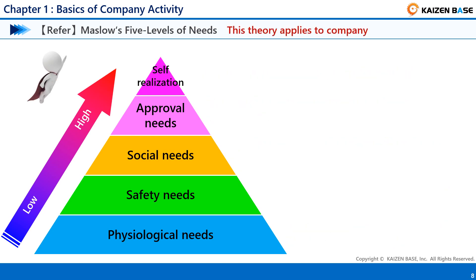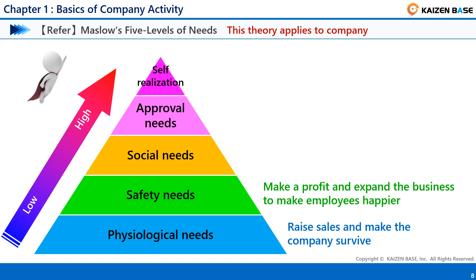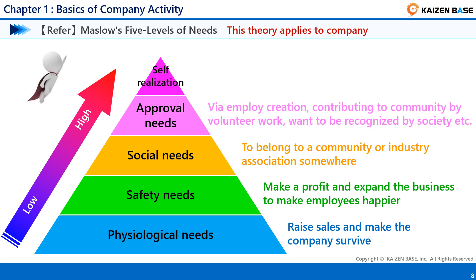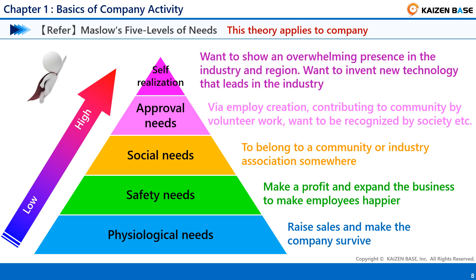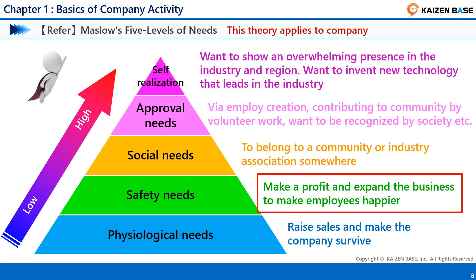These 5 levels of needs also apply to a company. In the stage when a company has just started, it needs to raise sales and make the company survive. When management settles down, the needs move to the phase of making profit and expanding the business to make employees happier. Then comes the desire to belong to a community or industry association, to contribute to the community through volunteer work, and to be recognized by society. The desires of companies also rise: wanting to show an overwhelming presence in the industry and region, and wanting to invent new technology that leads the industry. As with safety needs, a company must make profit and expand the business to make employees happier — the business cannot be expanded without making profit, and profit cannot be returned to employees. Profits are needed for a company to grow.